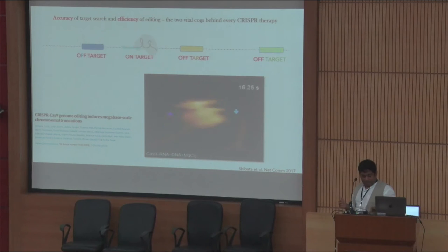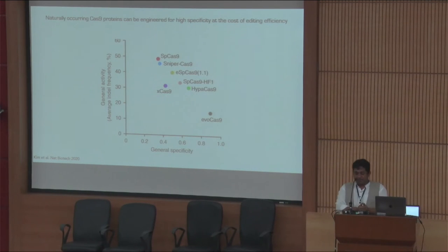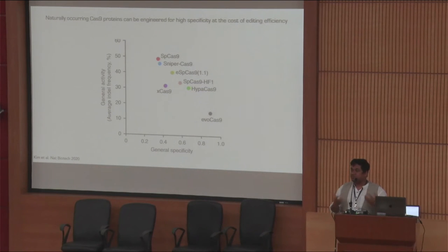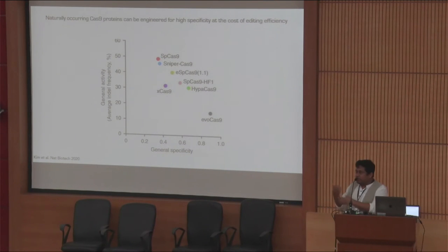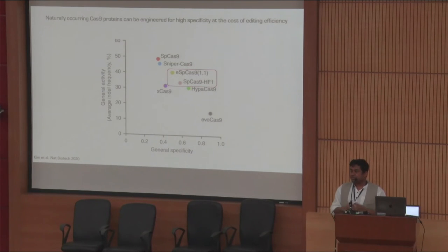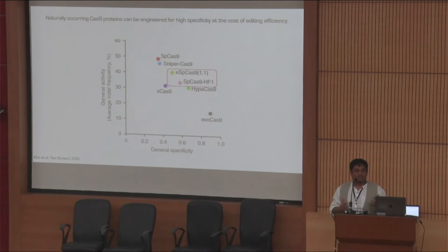Many people have been working on this since Cas9 came, including us. Generally, you take a template CRISPR — in this case the Streptococcus pyogenes Cas9. You do protein engineering to make it more specific, reducing non-specific contacts by engineering the protein. As you keep doing that, something interesting happens: your activity falls down. The more specific it becomes, the activity goes down and your efficiency of correction also goes down. So you have to find a sweet spot in between. These are the versions that went into trials — there is an inverse relationship between activity and specificity.